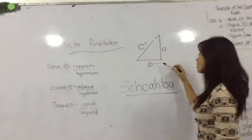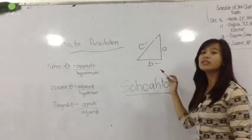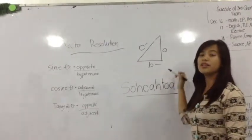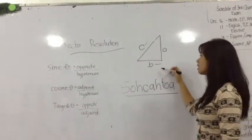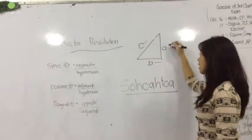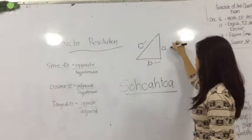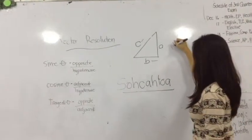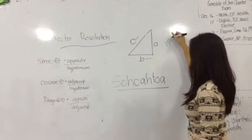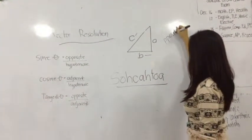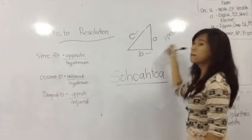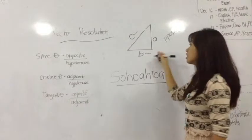As you can see in these illustrations, there is a right triangle. One side represents the opposite, and another side represents the adjacent.